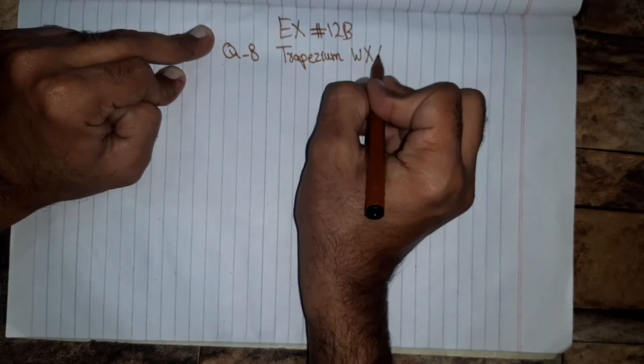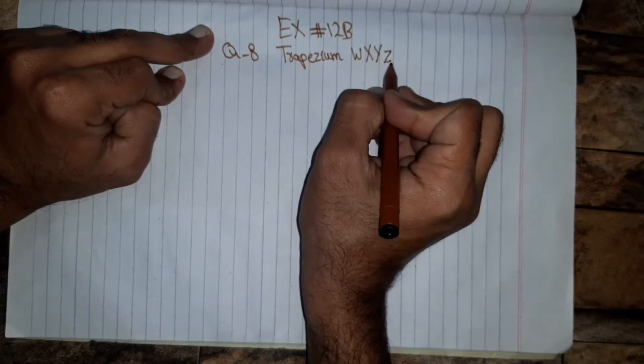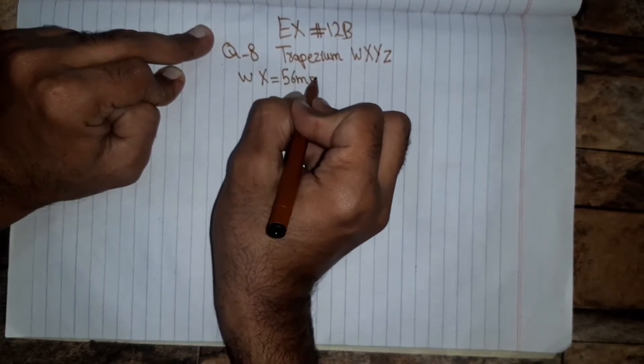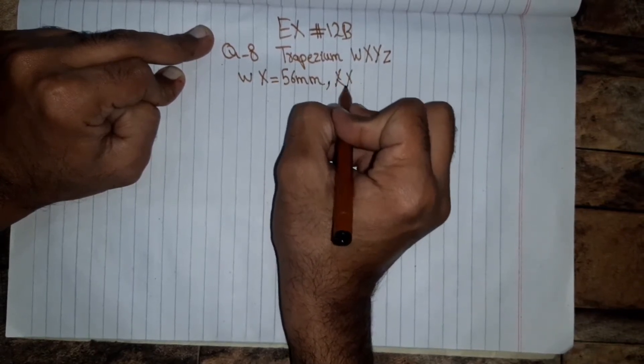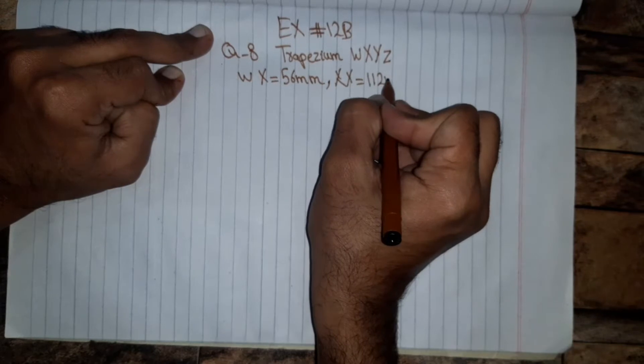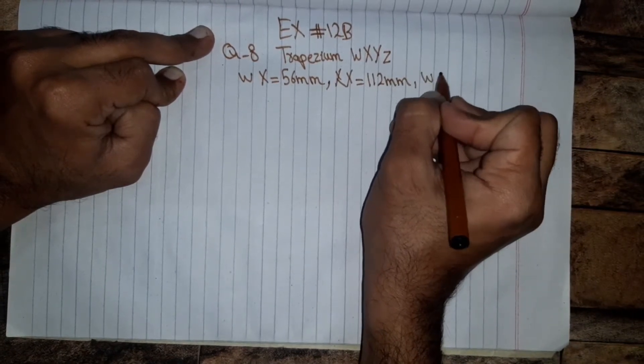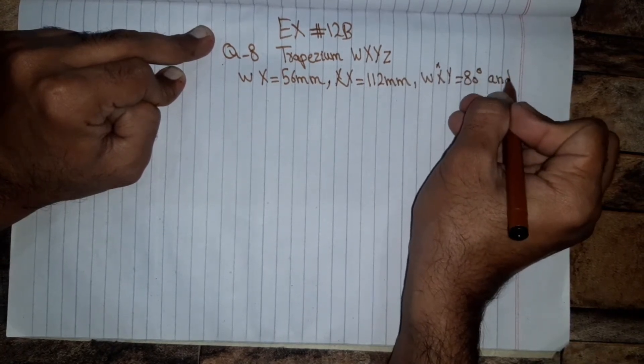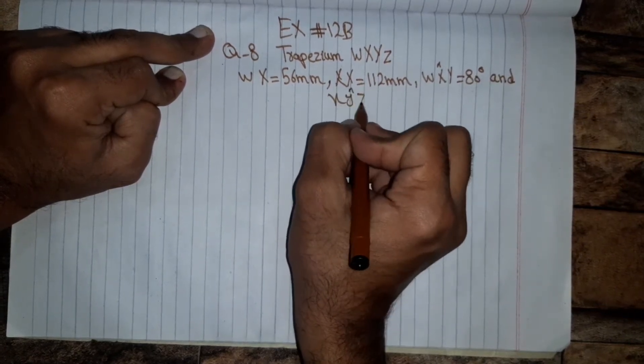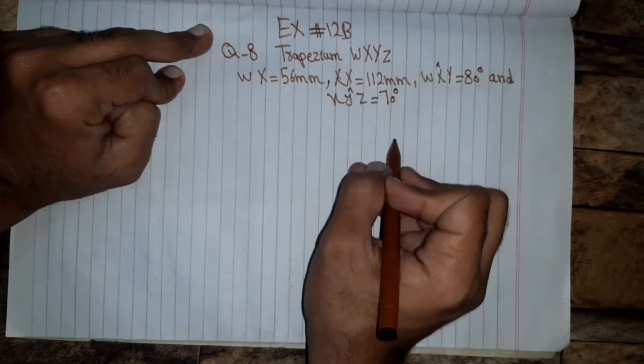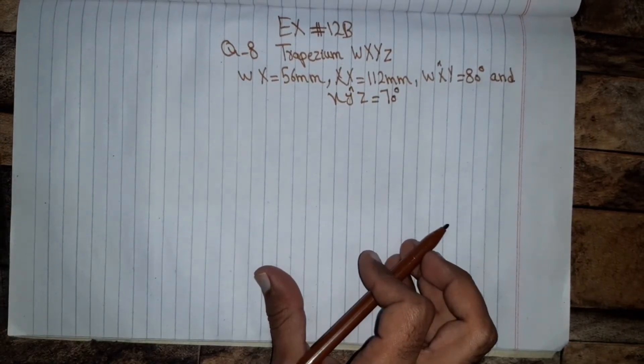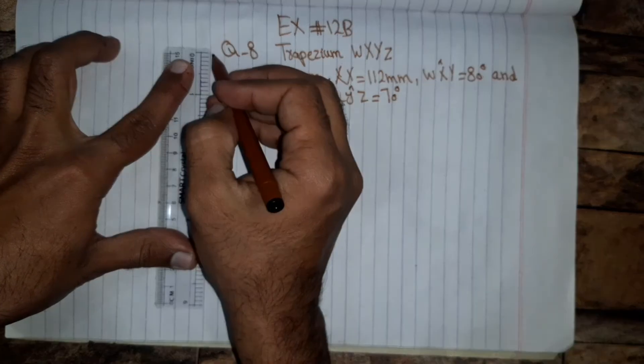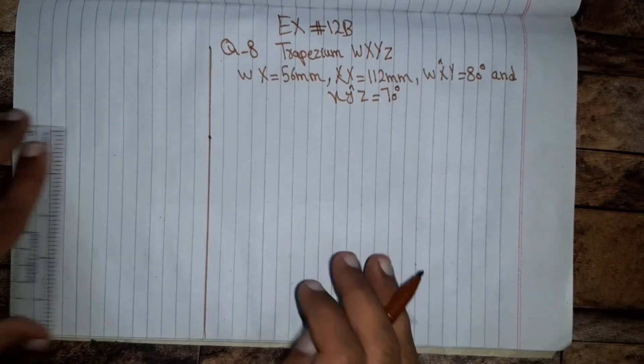We have to construct a trapezium WXYZ. WX is given which is equal to 56 millimeters, then XY is given which is equal to 112 millimeters, and then angle WXY is given which is equal to 80 degrees and angle XYZ equal to 70 degrees.